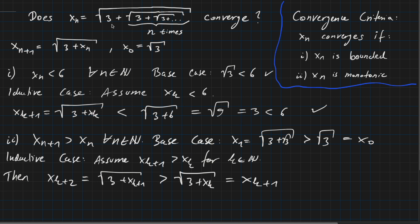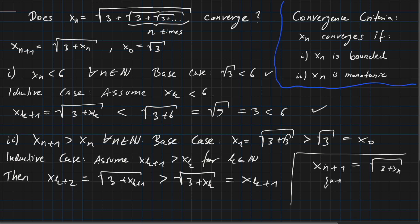Using our convergence criteria, we now know that x_n converges to some limit. Since x_n converges, we can use the following trick: x_{n+1} = √(3 + x_n). Both x_{n+1} and x_n converge to the same limit as n goes to infinity. Calling this limit x, we get x = √(3 + x).